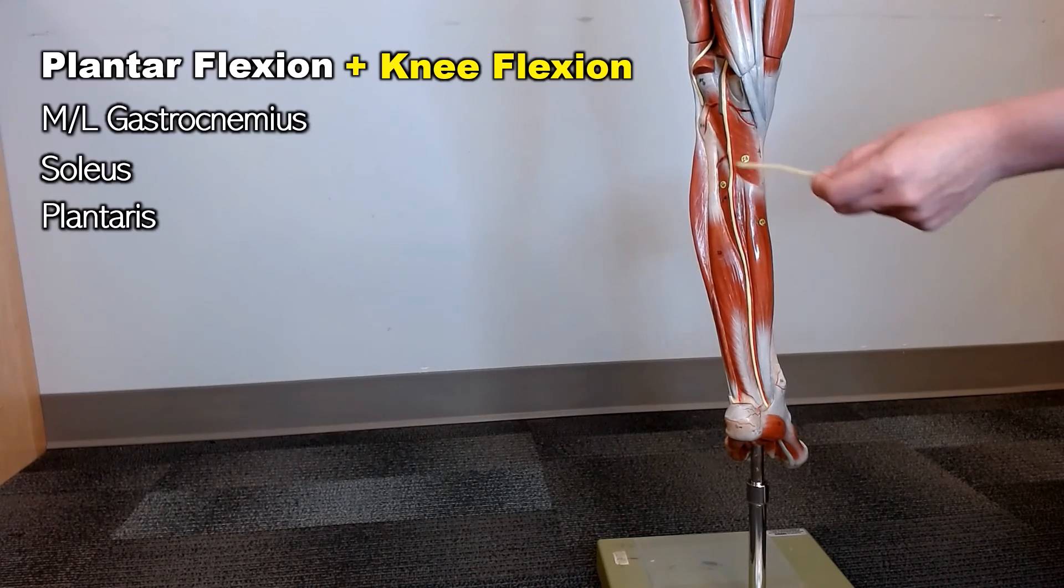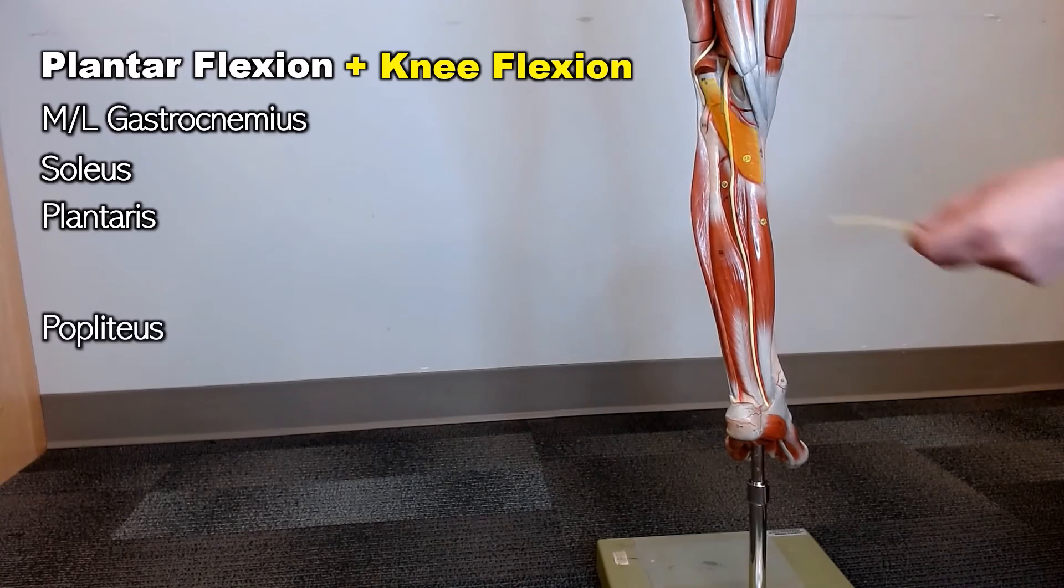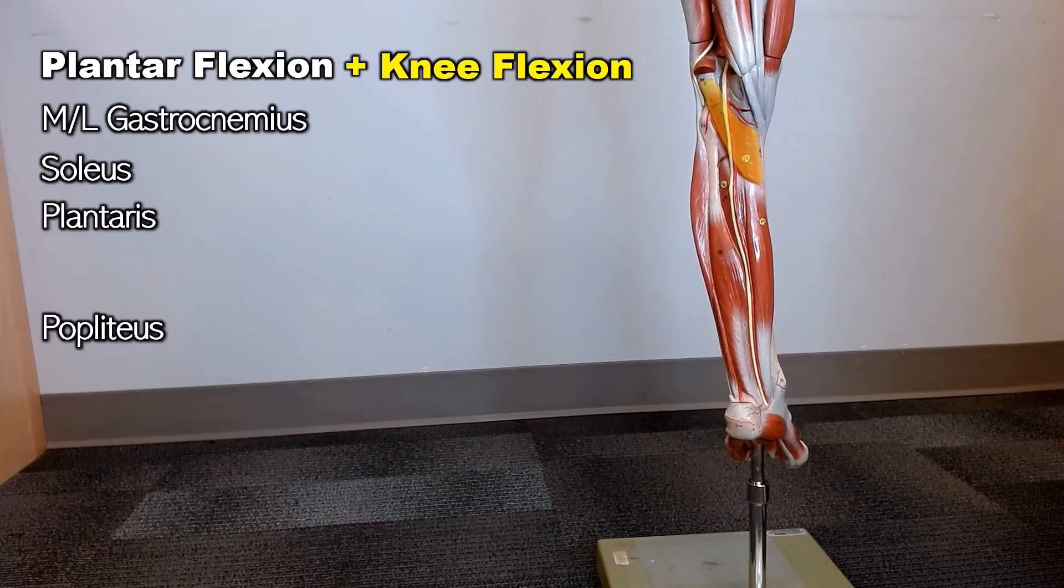So coming down in, this is the popliteus muscle. Remember the back of your knee was the popliteal region.